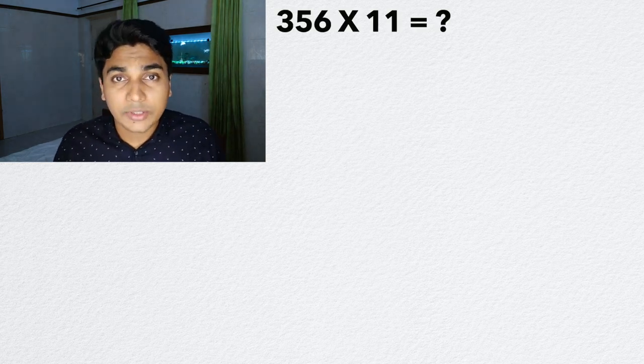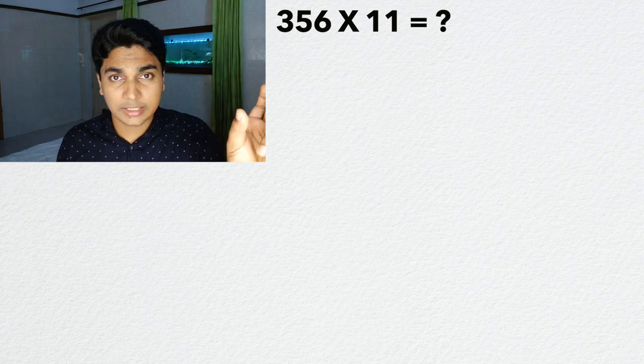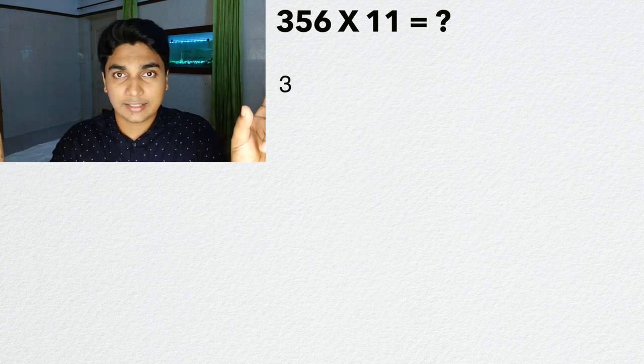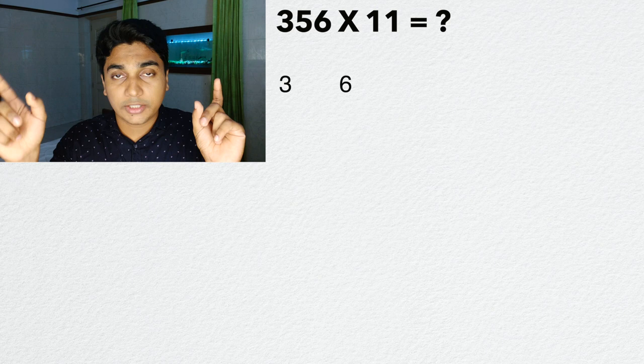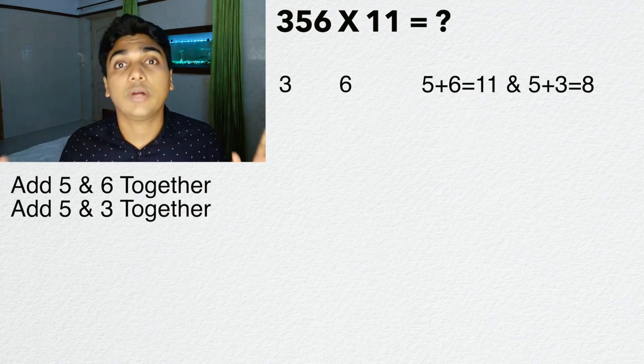356. What is 356 times 11? The answer is simple. You take 3 first. You take 6 at last. Add 5 and 6, you get 11. Add 5 and 3, you get 8.